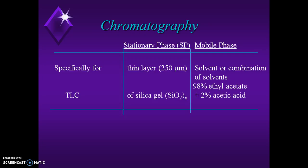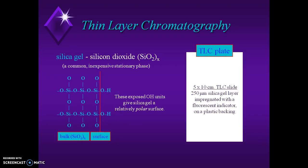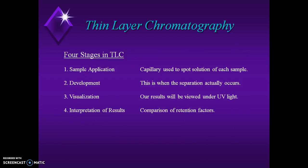Specifically in thin layer chromatography, the stationary phase is mostly a thin layer of adsorbent over an inert support — mostly glass or plastics. The most common choice of adsorbent is silica gel. Silica gel consists of silicon dioxide. It is coated as a thin layer on a back support to form the TLC plate. The surface of silica gel has hydroxy functional groups, which makes the nature of the stationary phase a polar one.